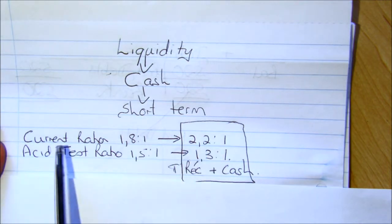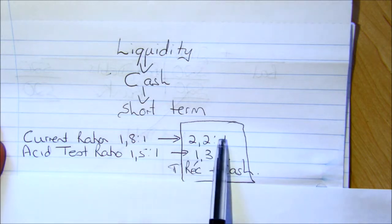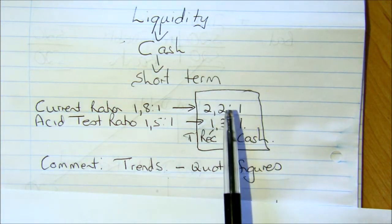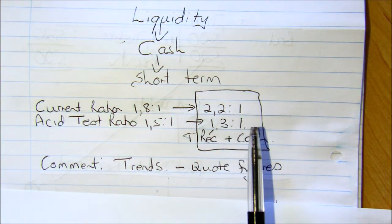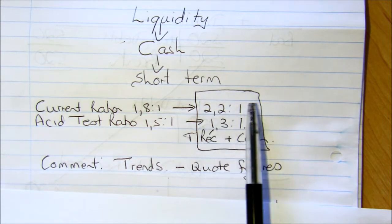That's what we mean by the trend. We compare from one year to another. The first thing you need to do in answering is name the two. Secondly, compare from last year to this year with the ratios. In this business, we can honestly say that they don't have a liquidity problem. They've got enough current assets here, whether they include inventory or not, to pay off their debts.